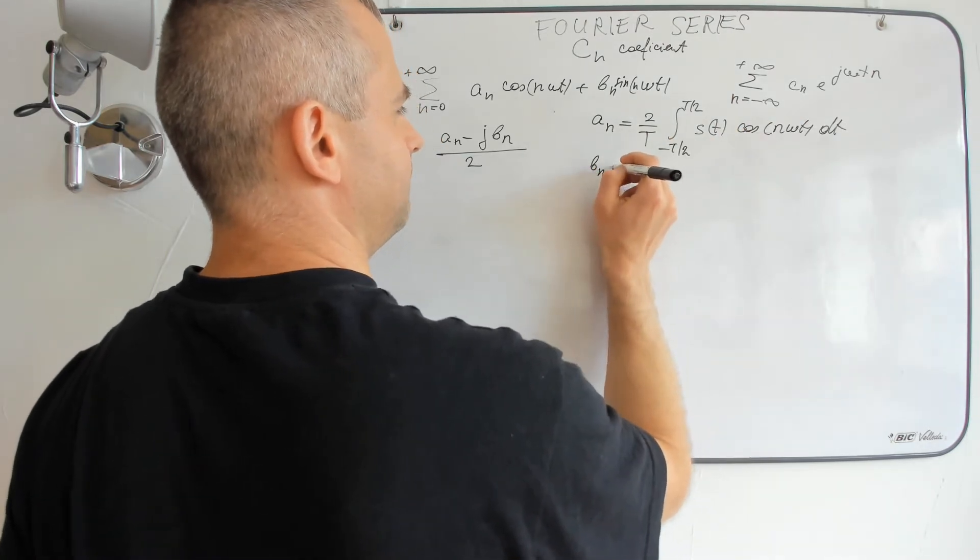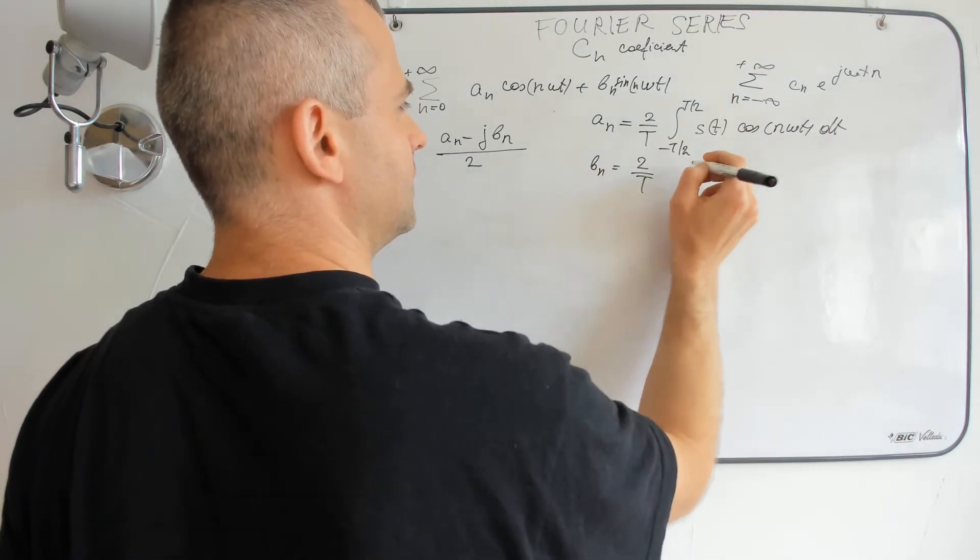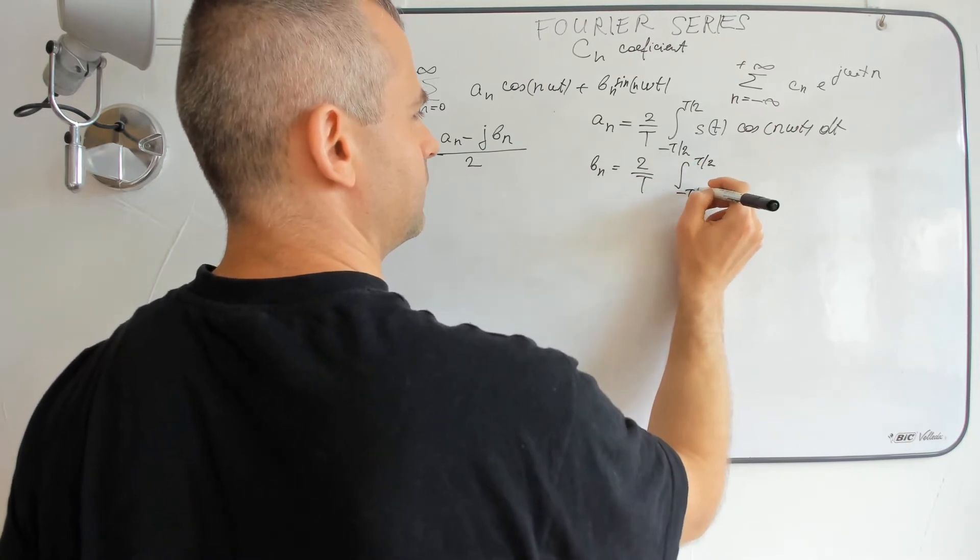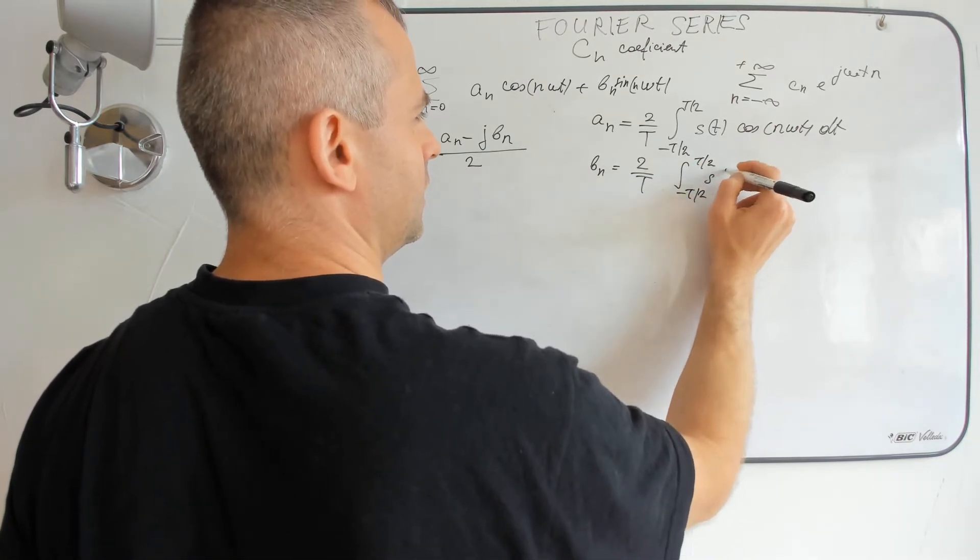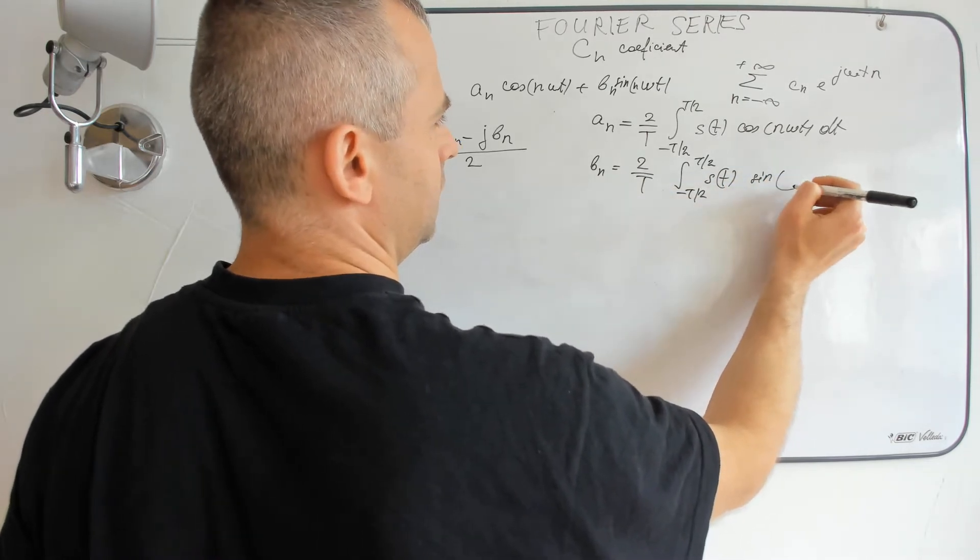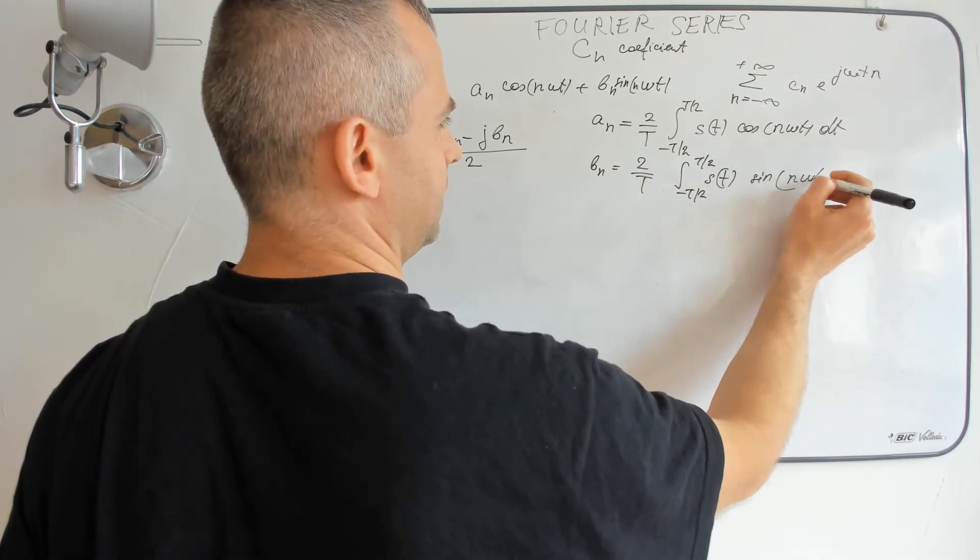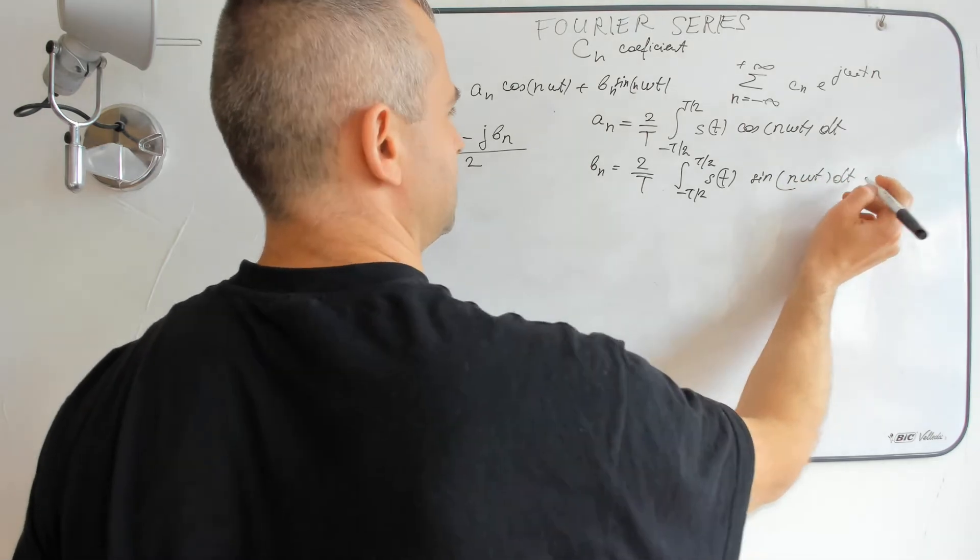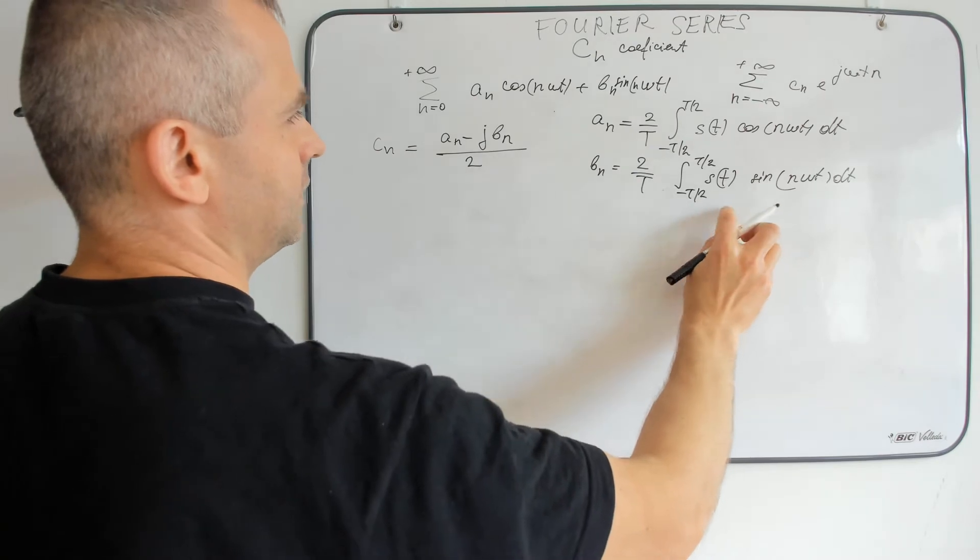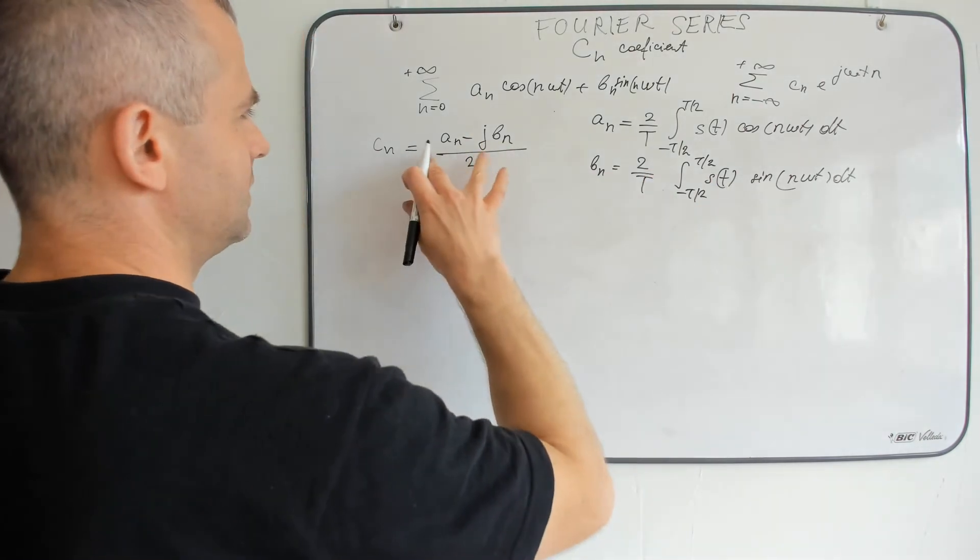And Bn is 2 divided by T integral of s(t) sin(n omega t) dt. So let's replace those two relations in this one.